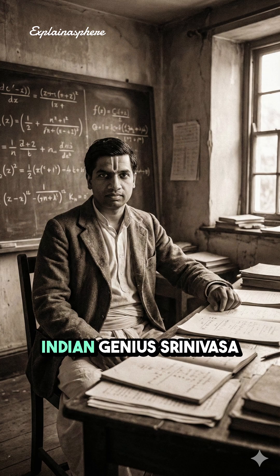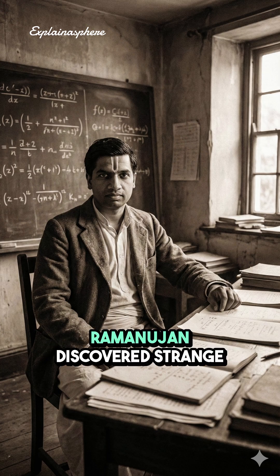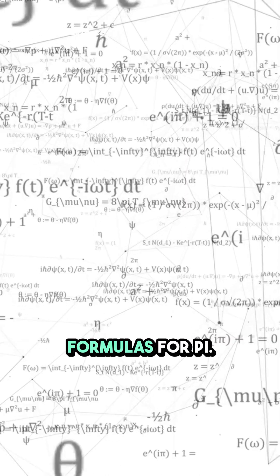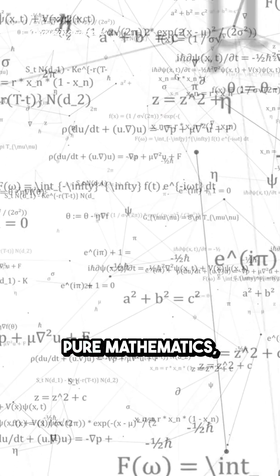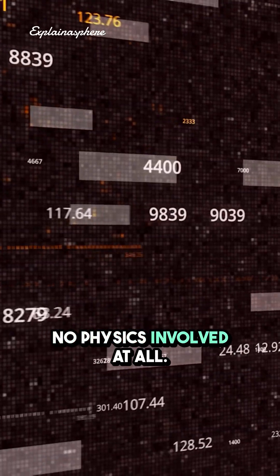Over a century ago, Indian genius Srinivasa Ramanujan discovered strange formulas for pi, pure mathematics, no physics involved at all.